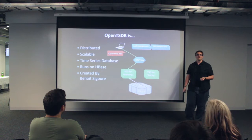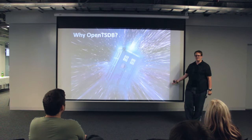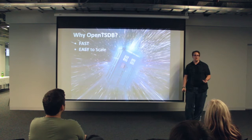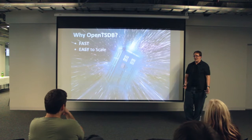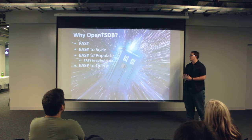Why would you even care about OpenTSDB if you've already got Cacti? Why go through the pain of setting up HBase and a whole other pipeline? Well, it's fast — I can't even begin to tell you how fast this stuff is. It's very easy to scale: if it gets slow, add more servers — that's literally all you do. Once you've got your configs figured out with Puppet, Chef, or CFEngine, you just add more servers and put the config on them. It's very easy to populate — very easy to put metrics in and collect them. And lastly, it's very easy to query, and I'll show you some examples of querying the interface to get data out.